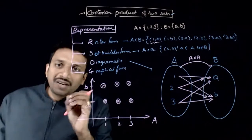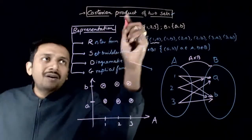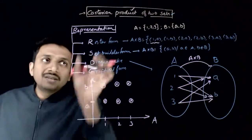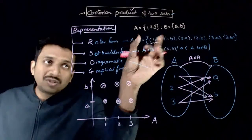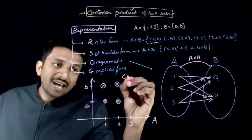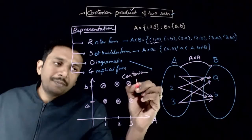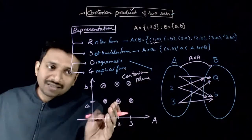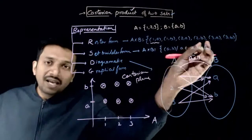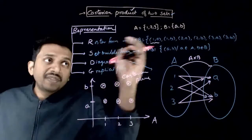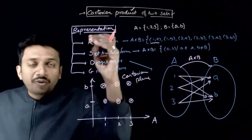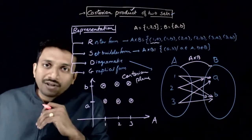So once you have understood the graphical form, you can see why this product is called Cartesian product, not just product. So why is this called Cartesian product? So once you multiply these two sets, you are getting ordered pairs which looks like points in the Cartesian plane, right? This plane is usually called Cartesian plane, right? So these elements looks like points in the Cartesian plane, that is why this multiplication is called the Cartesian product of two sets. So I hope you have understood how to represent A x B.